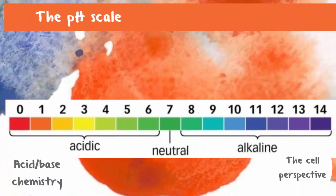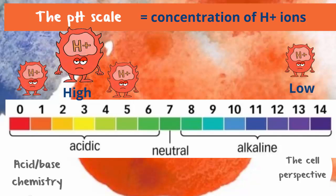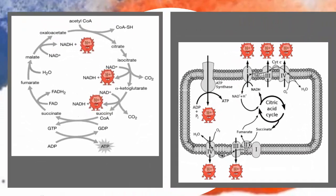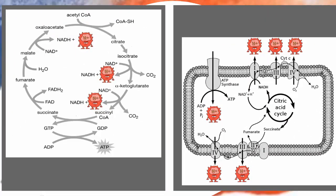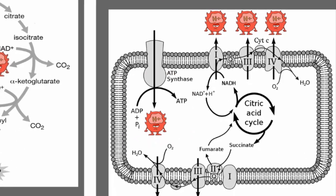So what is pH? It's a scale that represents the number of protons, or hydrogen ions, available to do chemistry. It can be a little confusing — low pH actually corresponds with high levels of protons. This might sound bad, but protons do a lot of chemistry. There are chemical reactions that generate them and chemical reactions that consume them. One of the most important chemical processes in the body, the generation of ATP, depends on proton pumps.